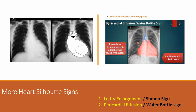Moving on: the water bottle sign, also known as pericardial effusion. Here we see a baseline bulging of the heart that is definitely more than 50% of the thoracic ratio, and it resembles a bottle filled with water. This appearance is typical of pericardial effusion.